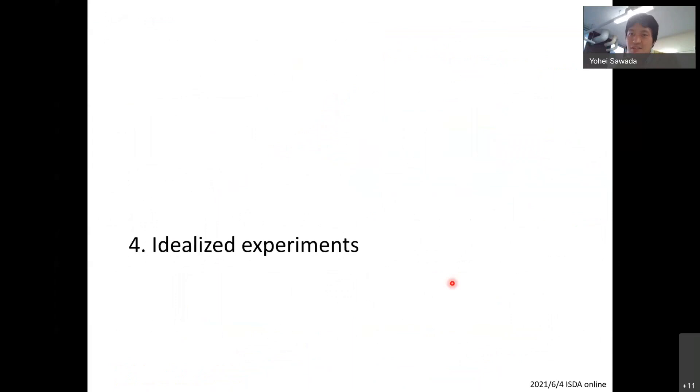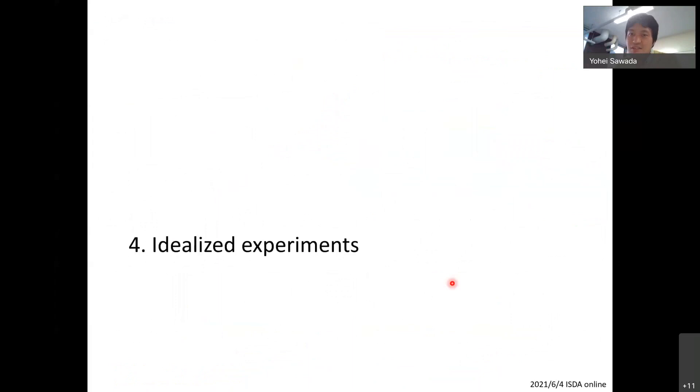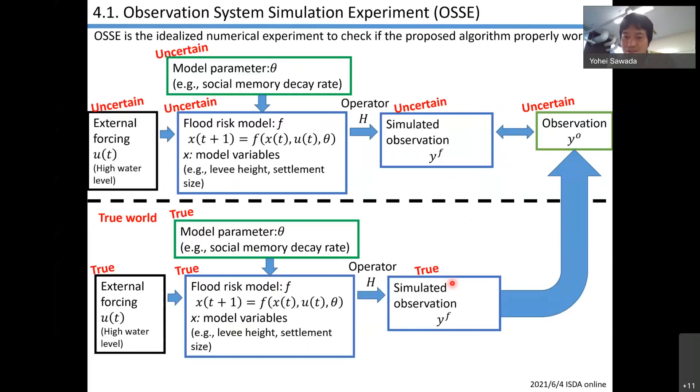Let's move on to idealized experiment. This is the OSSE. I don't have to explain the details of it. We generate the observation by the kind of true simulation. Using the generated observation, we try to recover the true state and parameters.